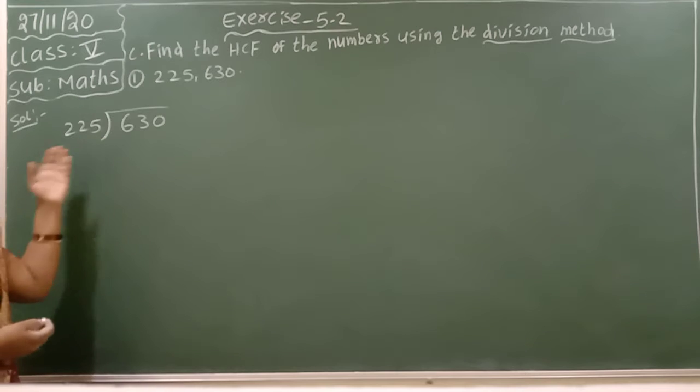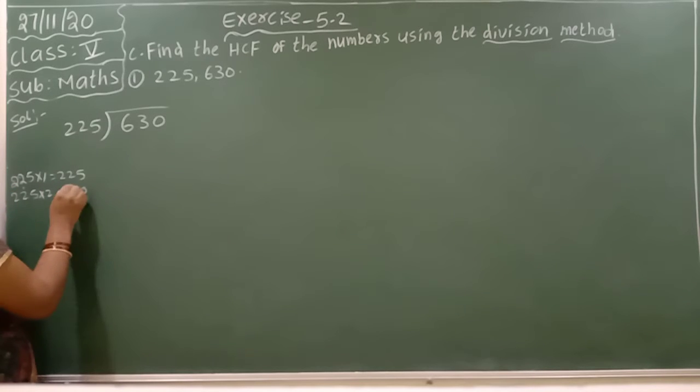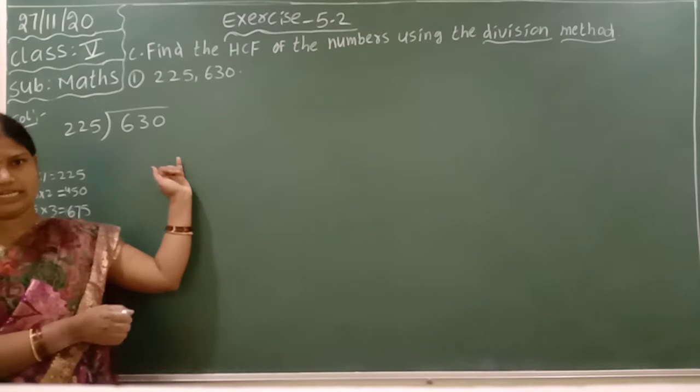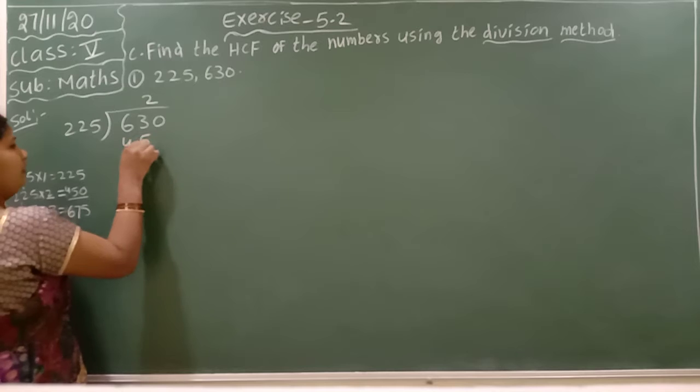Here we want the 225 table now. 225 times 1 is 225. 225 times 2 is 450 (2 times 5 is 10, 2 times 2 is 4 plus 1 is 5). Multiply with 3: 3 times 5 is 15, 3 times 2 is 6 plus 1 is 7, 3 times 2 is 6. That's 675.